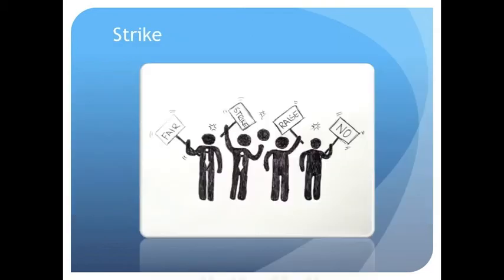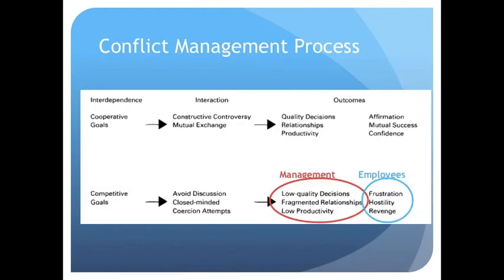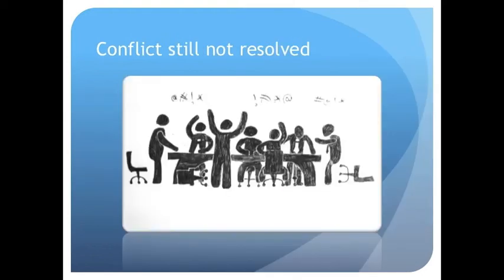Conflict within Maruti Suzuki then escalated, with 2,500 employees striking without notice on Saturday the 4th of June, resulting in massive production losses for the company and harsh disciplinary actions for employees, with 11 staff losing their jobs. This outcome further reveals the destructive nature of competitive goals, with relationships fragmented, poor decisions made and production losses. With employees seeking revenge through hostile strikes and a feeling of overall frustration between all parties, after many negotiations, mediations, strikes and employee pay losses, the conflict was still not resolved, highlighting the negative consequences of conflict in the workplace when managed in a competitive way.